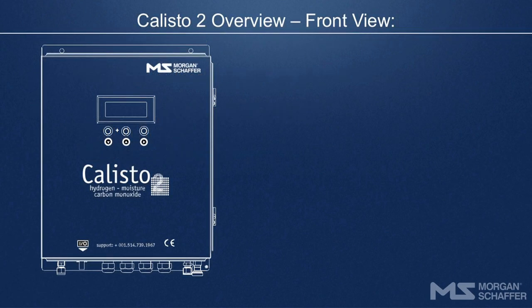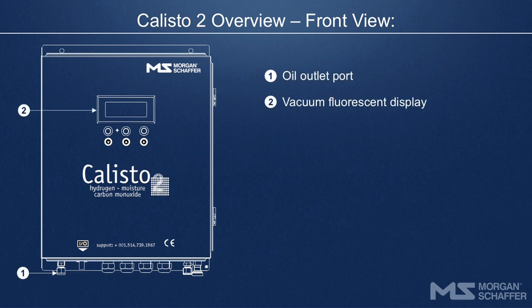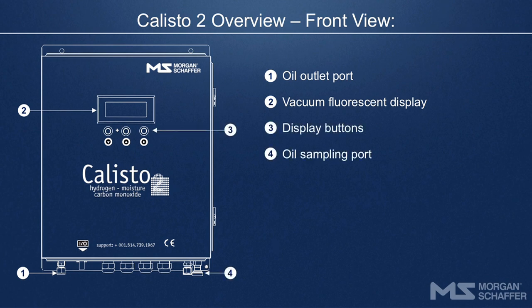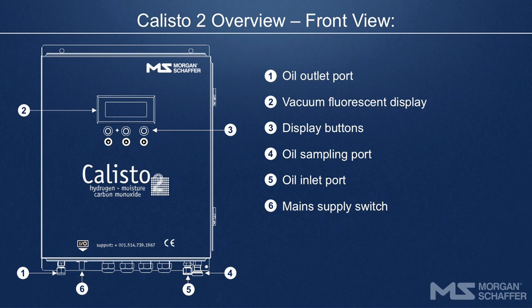Callisto 2 Overview. This is an overview of the front view of a Callisto 2. Key components include the oil outlet port, vacuum fluorescent display, display buttons, oil sampling port, oil inlet port, and mains supply switch.